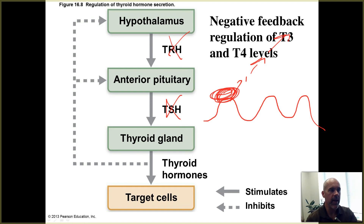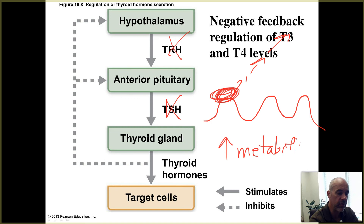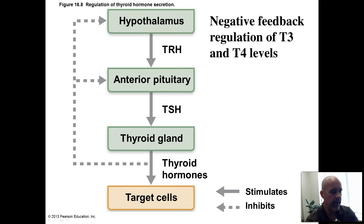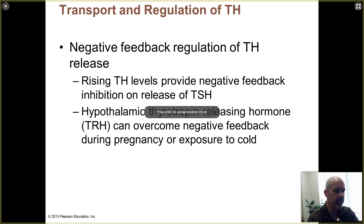If you keep making TRH and TSH, T3 and T4 levels are just going to keep going up and never come down. You don't want concentrations of T3 and T4 that are too high — they control metabolism, so overproducing them would really jack up your metabolism. Some people might think that sounds good, but it's actually not when it happens.